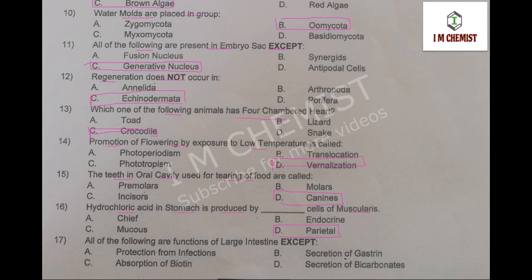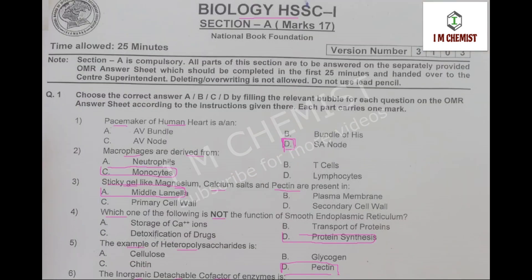MCQ number 17: all of the following are functions of the large intestine except. This is found at pages 279 and 280 of your book. The right option is secretion of gastrin — gastrin is not secreted by the large intestine but by the small intestine. Other options like protection from infections, absorption of biotin, and secretion of bicarbonates are functions of the large intestine.